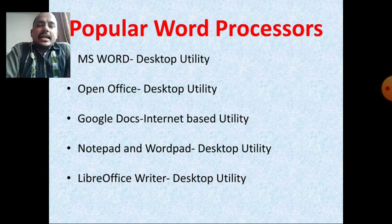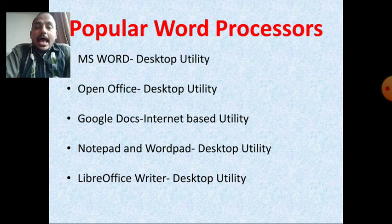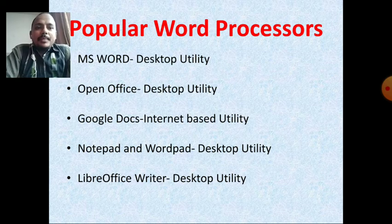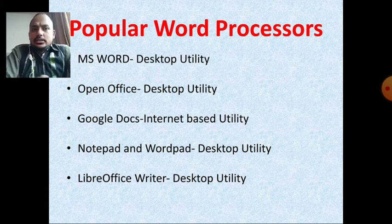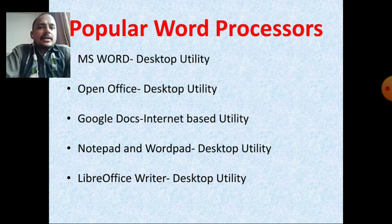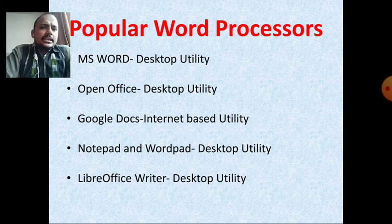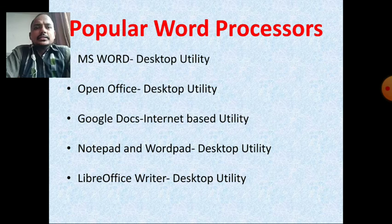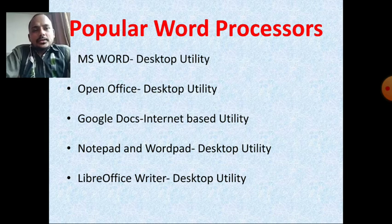Now you will understand the popular word processors. These include MS Word — a desktop utility — Open Office — desktop utility — Google Docs — an internet-based utility — Notepad and WordPad — desktop utilities — and LibreOffice Writer — a desktop utility. Desktop utility means commonly used on desktops, and Google Docs is commonly used on the internet only. These are some kinds of word processors mostly used for typing or creating documents, each having different features and purposes.